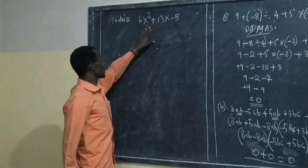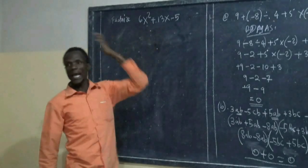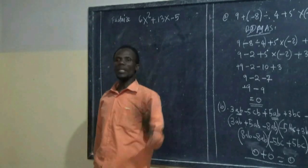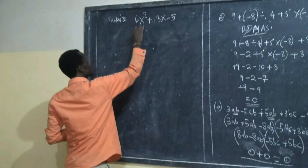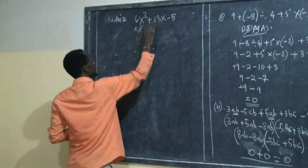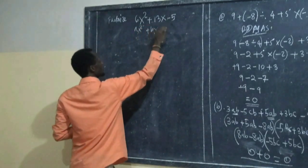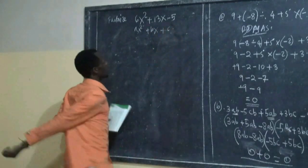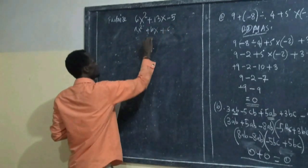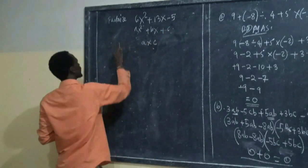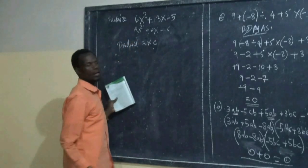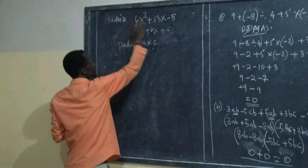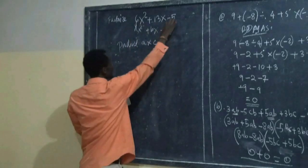Factorize this expression. Let us split the middle term. This is Ax² plus Bx plus C. Then A times C. We are looking for the product. A times C. A here is 6, C is negative 5.